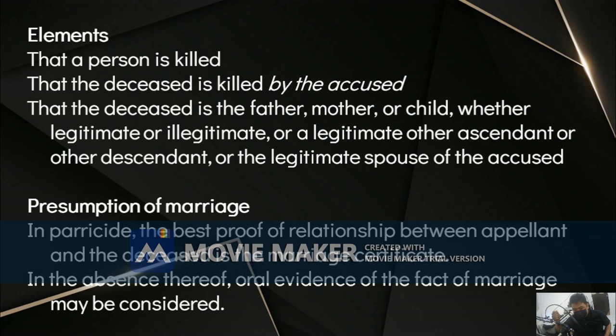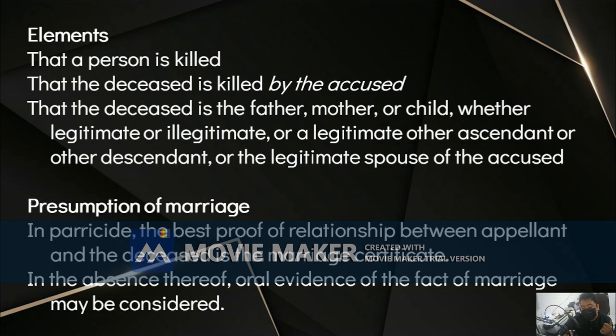The relationship must be alleged in the information. A wife of the victim cannot be convicted of parricide if she is charged only with murder. However, the relationship must still be considered as an aggravating circumstance even if not alleged in the information. So if you want to convict someone of parricide, you must allege in the information that they are legally married. If not alleged and the charge is only murder, then it is only murder — but the relationship will serve as a generic aggravating circumstance.